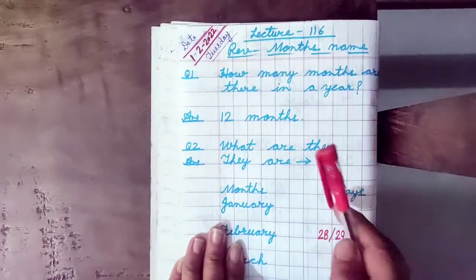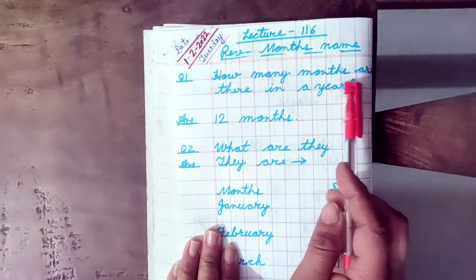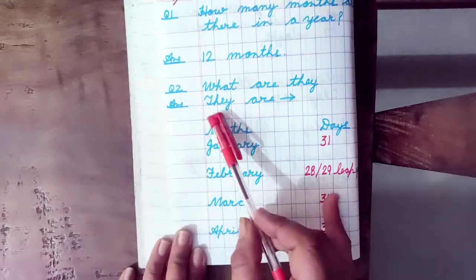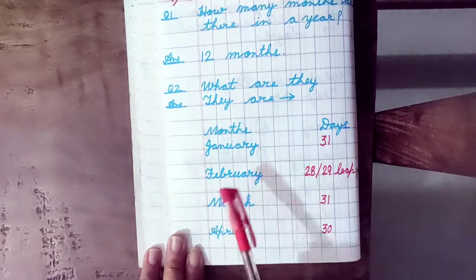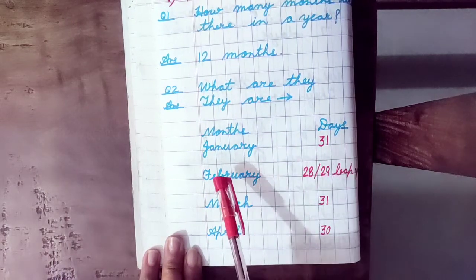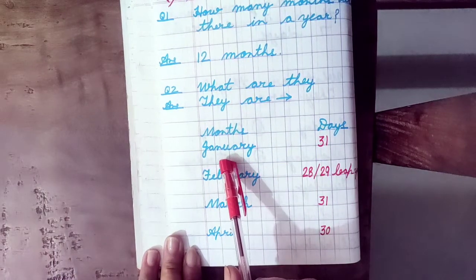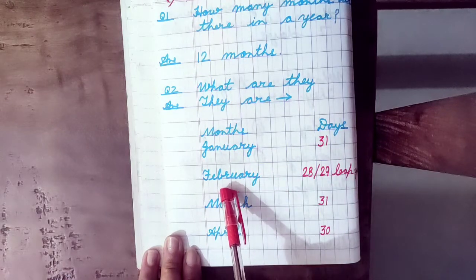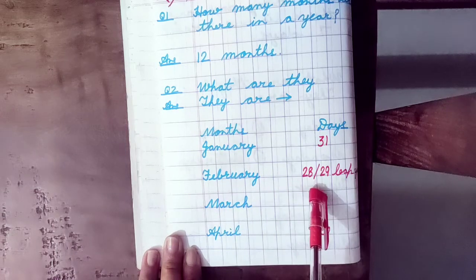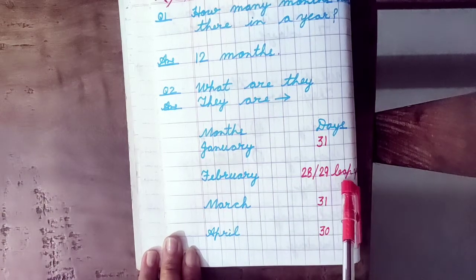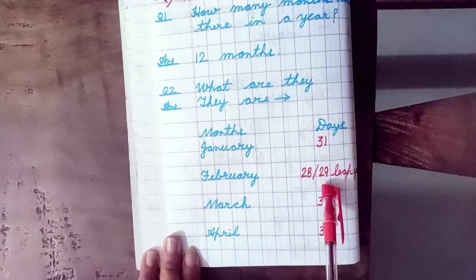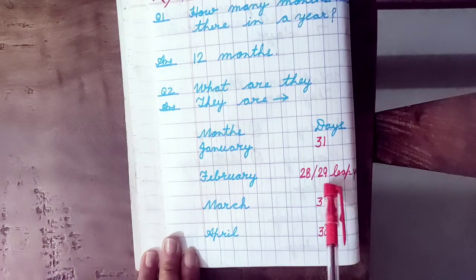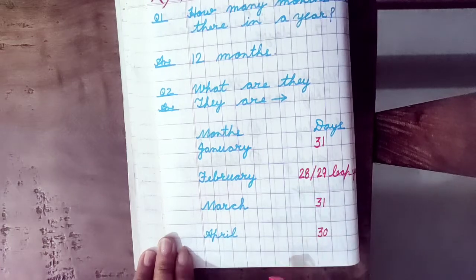Question number 1: how many months are there in a year? The answer is 12 months. They are the months and their days. J-A-N-U-A-R-Y January, 31 days. F-E-B-R-U-A-R-Y February, 28 or 29 days. When it is a leap year, this month has 29 days; otherwise 28 days.